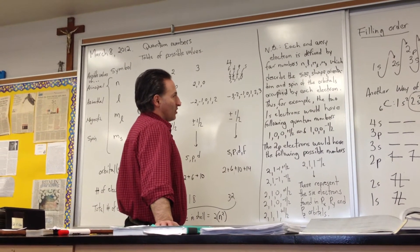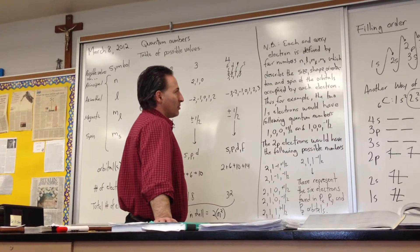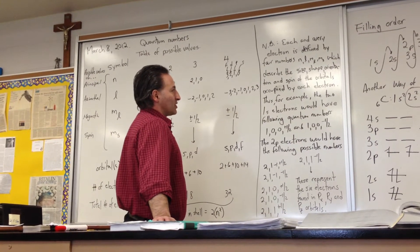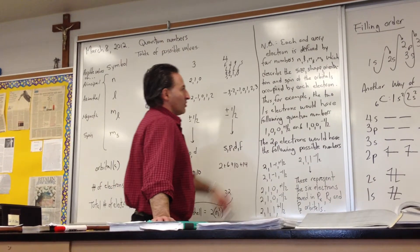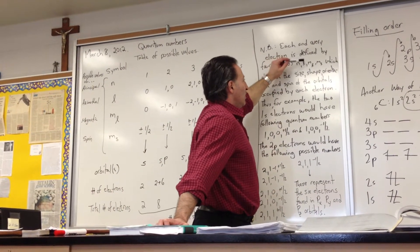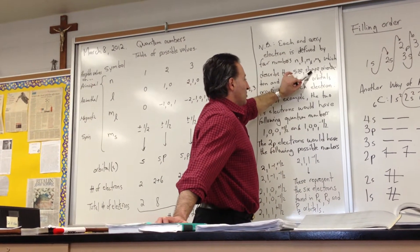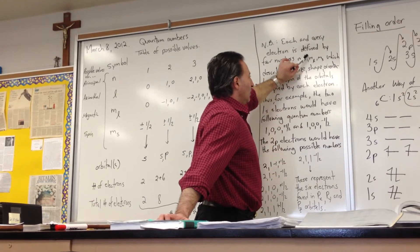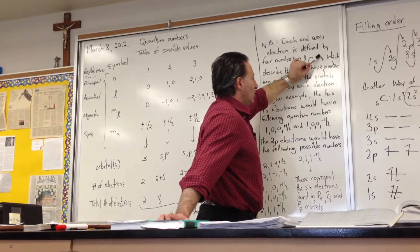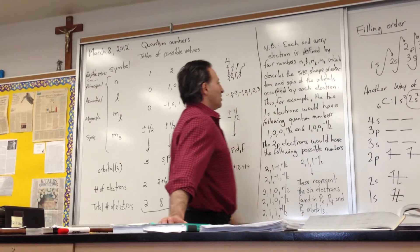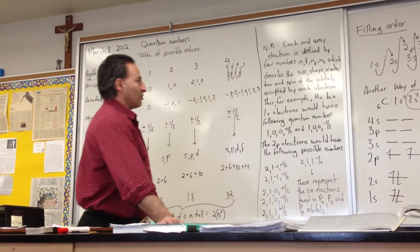Notice that each and every electron is defined by four quantum numbers, which describe the size, shape, orientation, and spin of the orbitals. So n describes the size, the azimuthal l describes the shape of the orbital, the magnetic describes the orientation, and the spin is for the spin pairing of the electrons within one orbital.